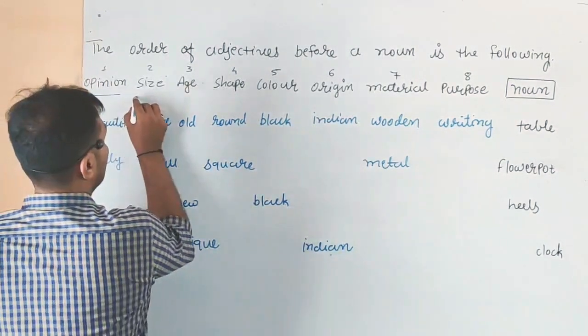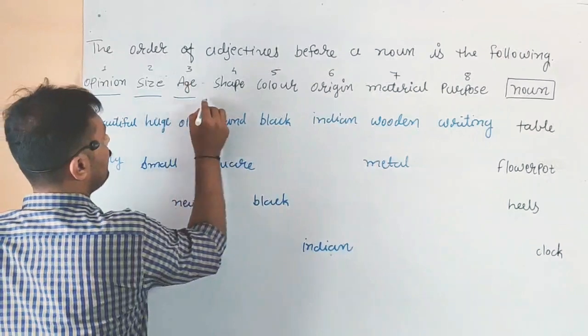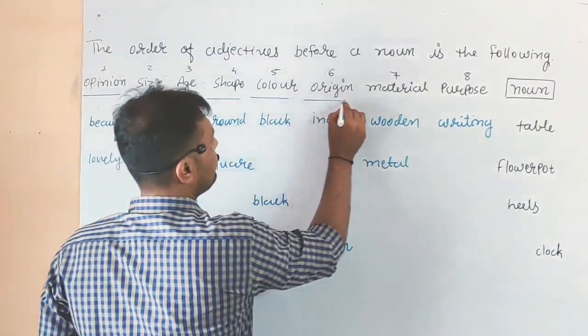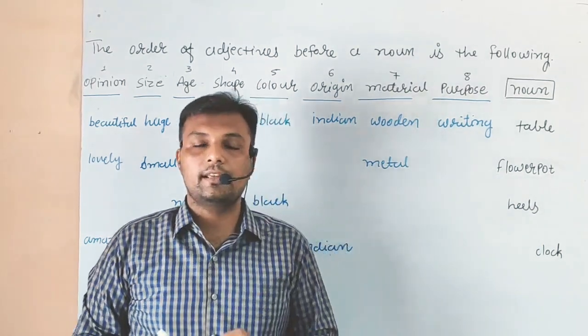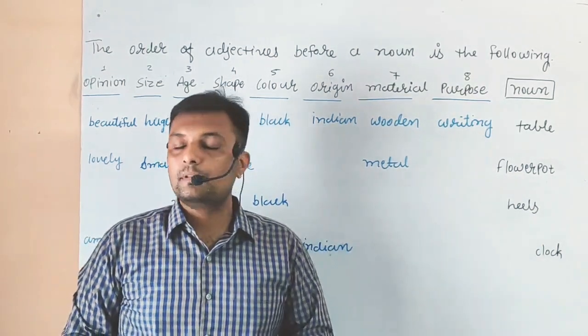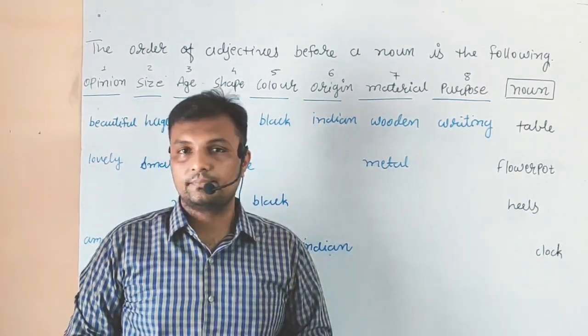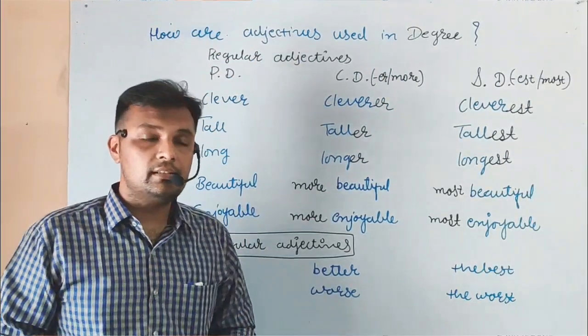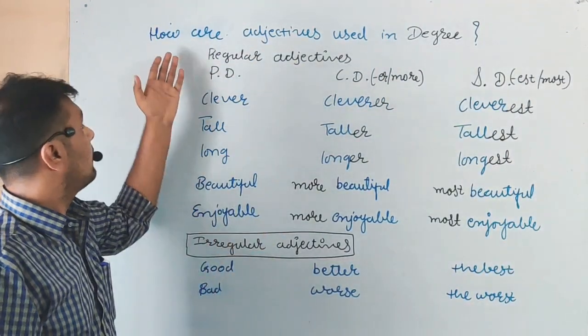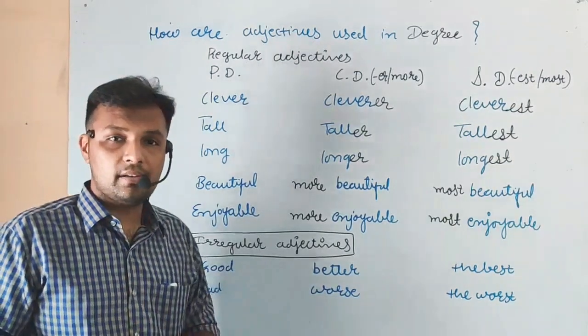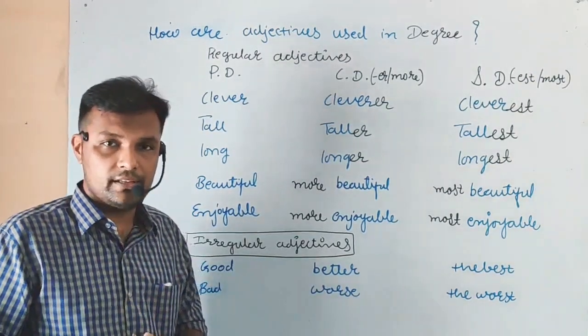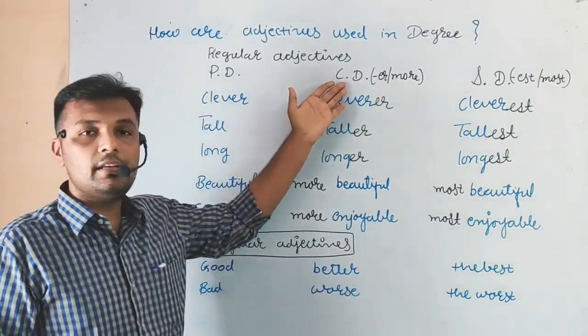Now let's see the usage of adjectives. How are adjectives used in degree? There are three types of degrees: Positive degree, Comparative degree, and Superlative degree.